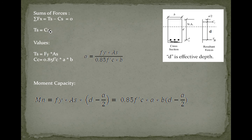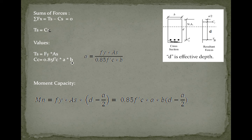Ts and Cc are both forces, so to get their values we multiply stress by area. Ts at failure is fy (the yield stress) times the area of the bars As. Cc is the stress 0.85 f'c times the depth a times the width b. Setting them equal leads to the value of a, which is: a = (fy × As) / (0.85 × f'c × b).